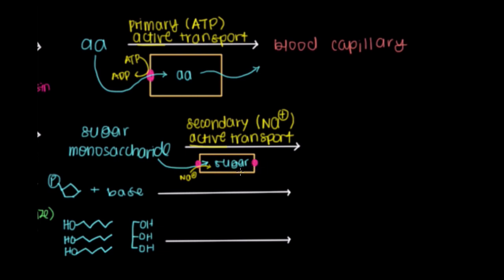And sort of the same thing happens on the other side, except as the sugar leaves, sodium on this side is entering. So, the sodium is still flowing down its concentration gradient, but it ends up inside the enterocyte, while the sugar leaves, and goes to the blood capillary. So, this also ends up in our bloodstream, and can go anywhere in the body to be used.